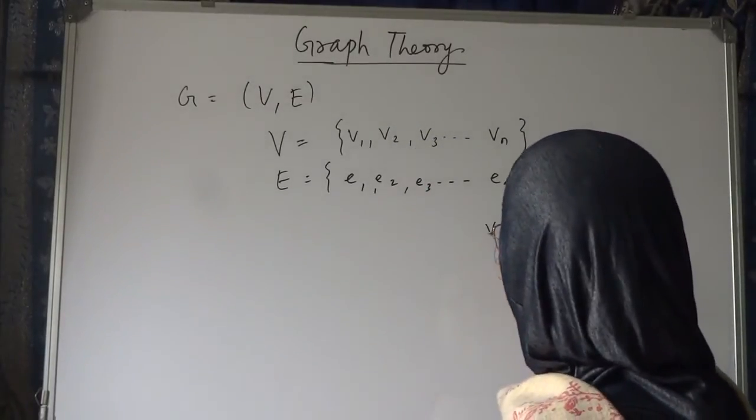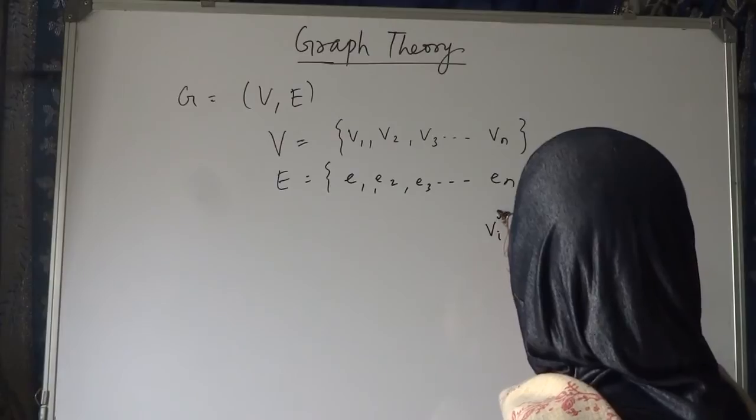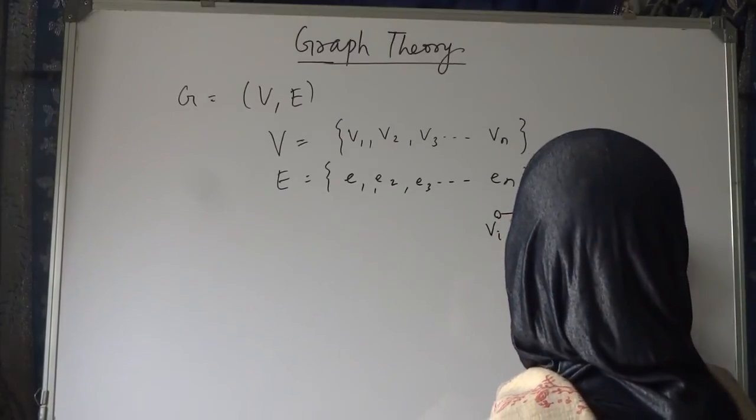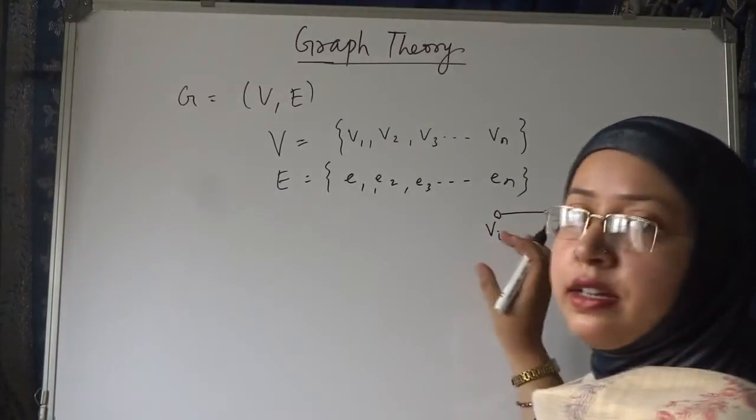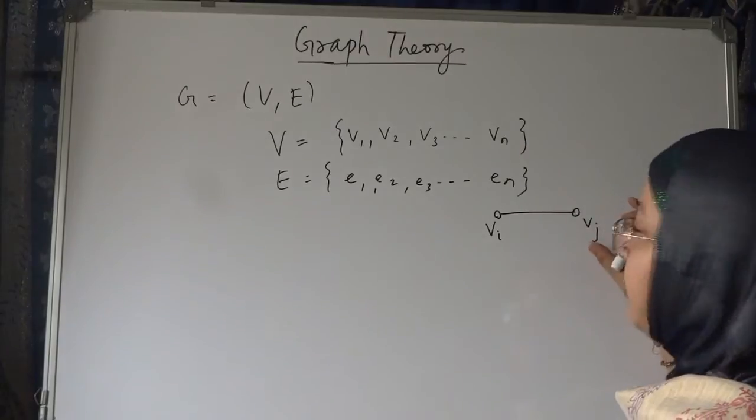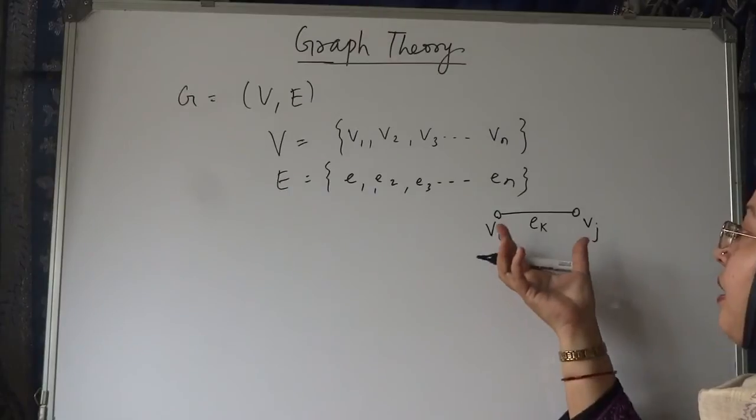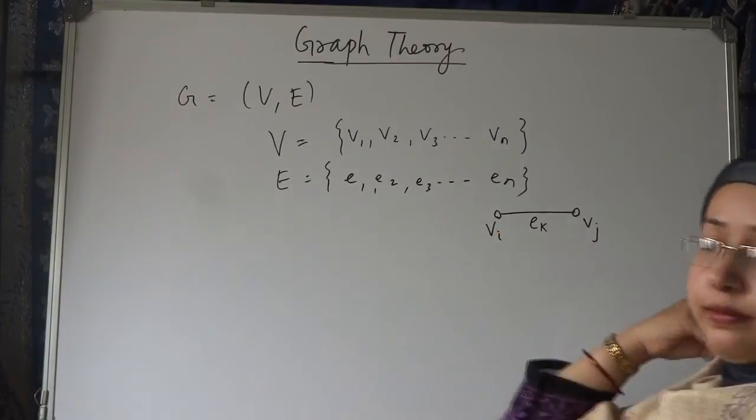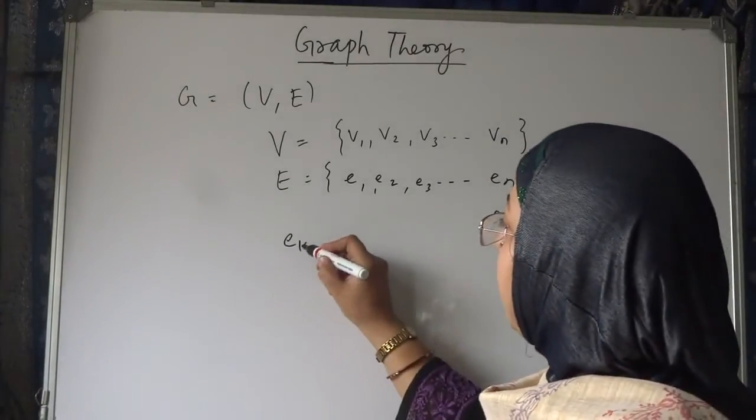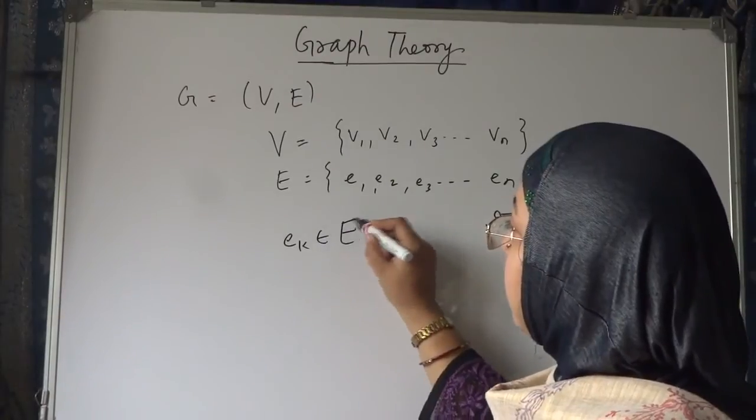Suppose these are two vertices, VI and VJ. This is one vertex VI, this is one vertex VJ. Then this is the edge EK between VI to VJ, where EK should belong to E.